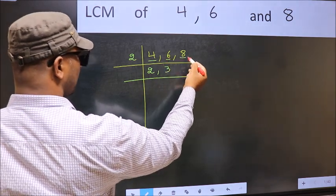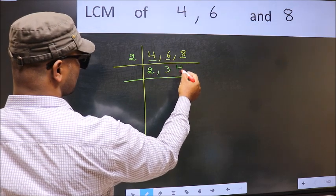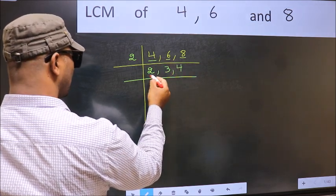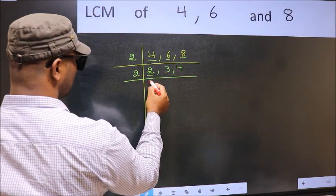The other number 8. When do we get 8 in 2 table? 2 4s, 8. Now here we have 2, 2 is a prime number. So 2 1s, 2.